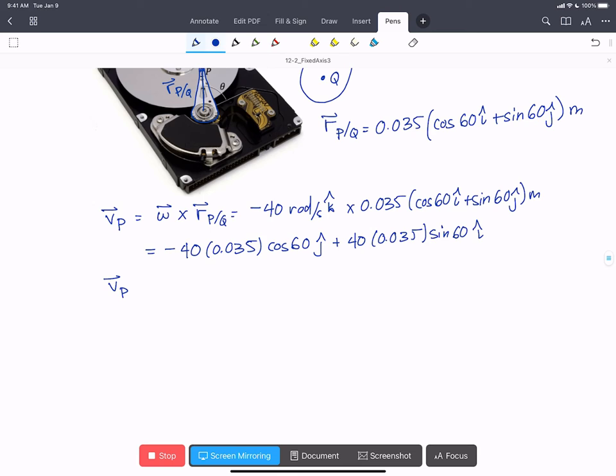If we calculate these numbers out, we're going to find that the velocity of P is 1.21 I hat minus 0.7 J hat meters per second.